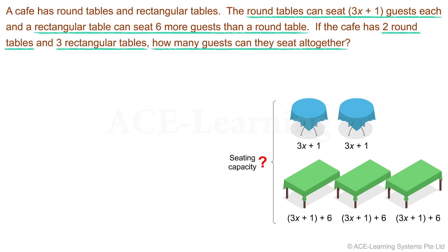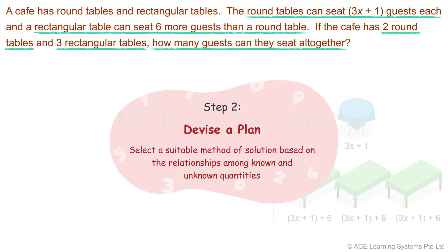Now that we have understood the problem, let's proceed to the next step. Step 2: Devise a plan. Select a suitable method of solution based on the relationships among known and unknown quantities.